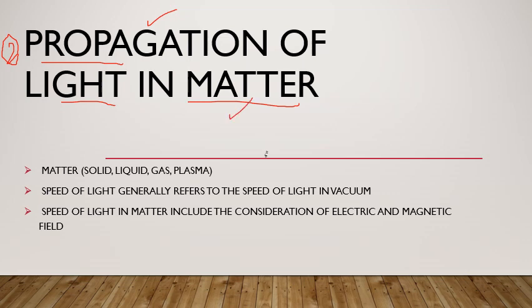Matter کی basic types تین ہیں، اور چوتھی newly discovered type plasma ہے۔ Solid میں molecules fixed distance پر ہوتے ہیں اور move نہیں کرتے۔ Liquid میں molecules move کرتے ہیں۔ Gases میں molecules بہت زیادہ expansion کے ساتھ ایک دوسرے سے دور ہوتے ہیں۔ Plasma وہ state ہے جب gases کو بہت زیادہ temperature دی جائے اور وہ different ions میں تبدیل ہونا شروع ہو جائیں۔